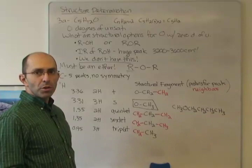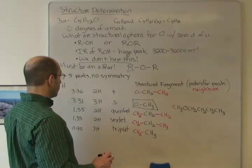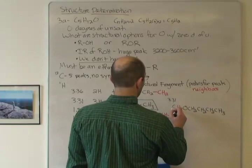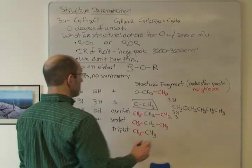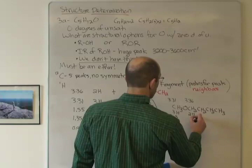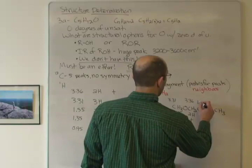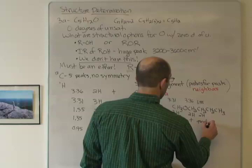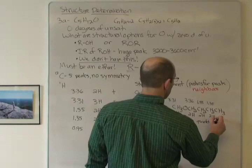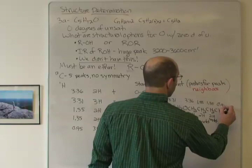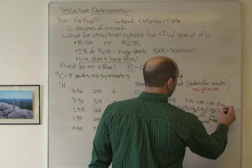And I think it's really important once you come up with a proposed structure to assign the peaks and make sure it all makes sense. So our CH3 at the end, this would be 3.31, and it would be a 3H singlet. The CH2 next to the oxygen, 3.36, 2H triplet. That makes perfect sense. Next one, 1.55, 2H quintet. Next one, 1.35, 2H sextet. And the final one, 0.95, 3H triplet, okay. And all of that makes perfect sense. But it's really important to double check and make sure that all of those things make sense.